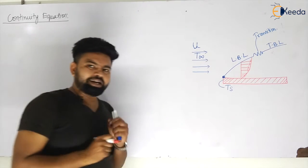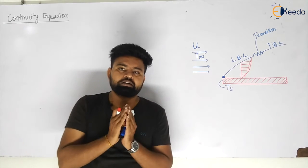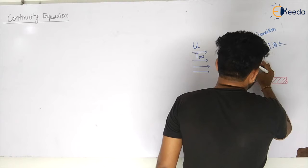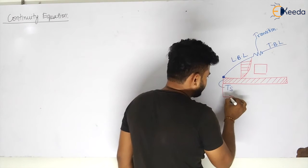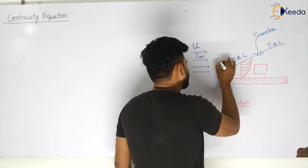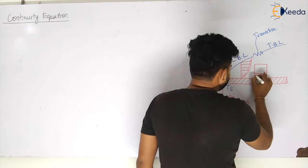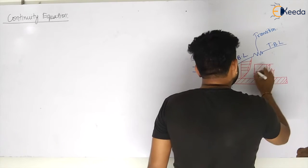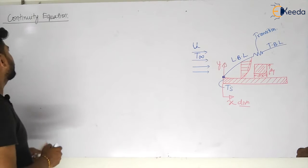I want to analyze an element inside this boundary layer so that I can calculate the total mass flow rate inside this particular element. Let us take a control volume — the x direction is horizontal and the y direction is vertical. I am taking this element of width dx and height dy.